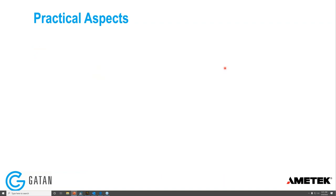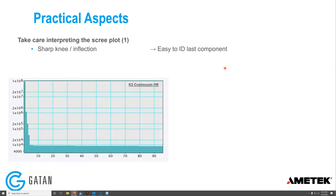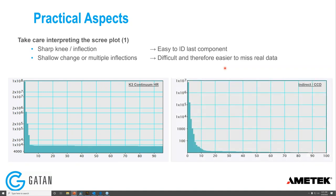Now let's cover some practical aspects. It was becoming clear in the software demo that you need to take care interpreting the scree plot. When there's a sharp knee or inflection, it's really easy to identify the last major real component. But if the change is shallow or there are multiple inflections, it's more difficult and easier to miss real data. The K3 data was an easy case; the semiconductor data was a medium case, still manageable.